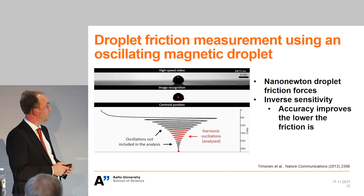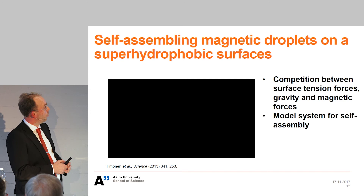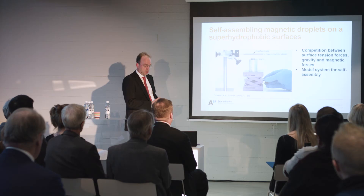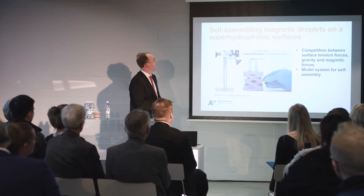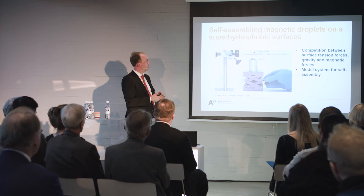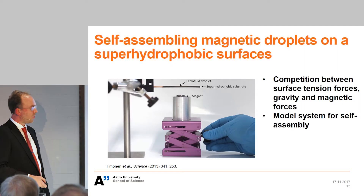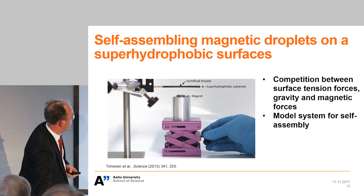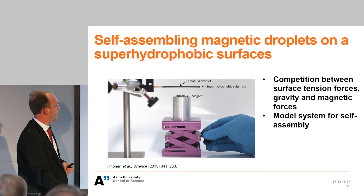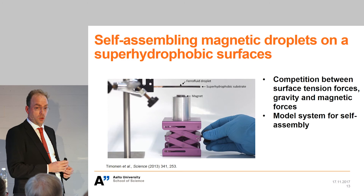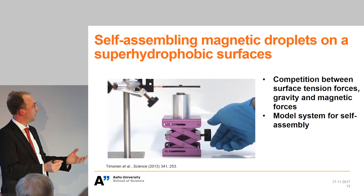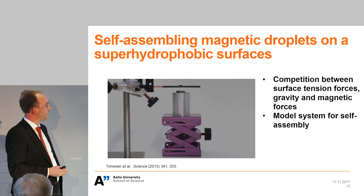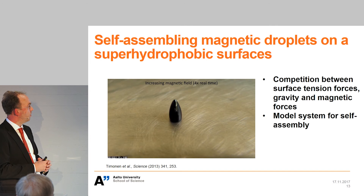We have also done work with concentrated magnetic droplets — a very high concentration of magnetic particles, but still a water droplet. When a magnet is brought near, the droplet changes shape and then starts to divide into multiple smaller droplets. There is a competition of forces: magnetic forces, surface tension forces, and gravity. The combination of these competing forces makes the droplet unstable, and it cleaves into multiple smaller droplets.